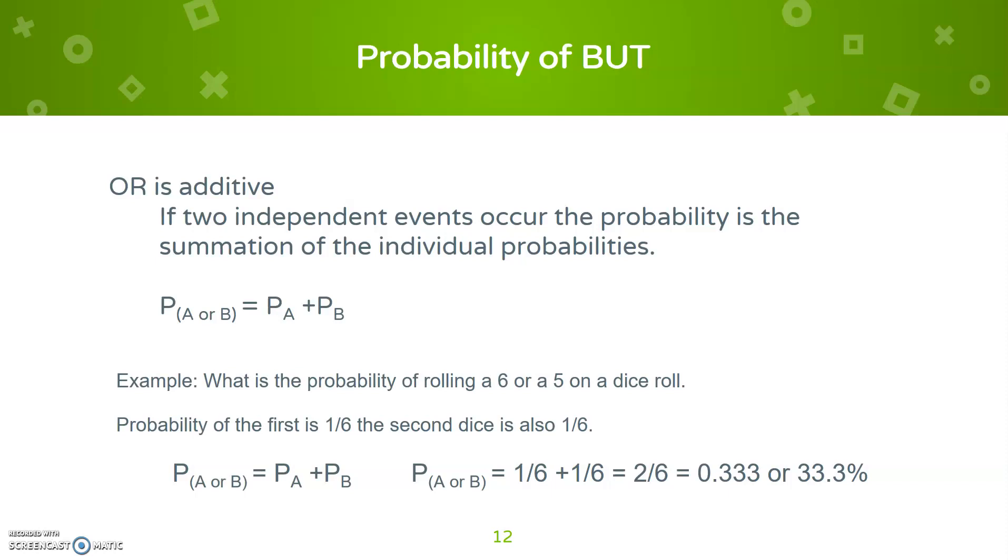But the probability of ors is going to be additive. So if two independent things occur and they have an or, then you can say the probability of A occurring or B occurring. For instance, what is the probability of a six or a five happening on a dice roll? Then you can add them: one-sixth plus one-sixth, which is two-sixths, or 33% chance.